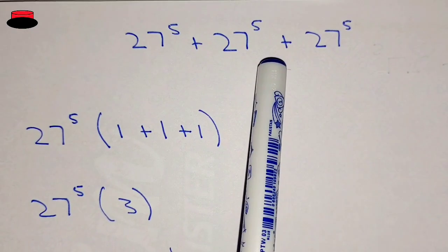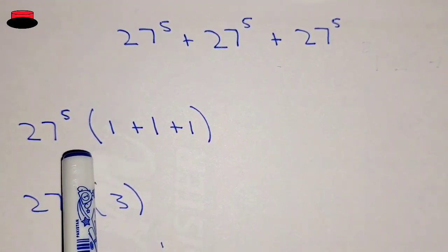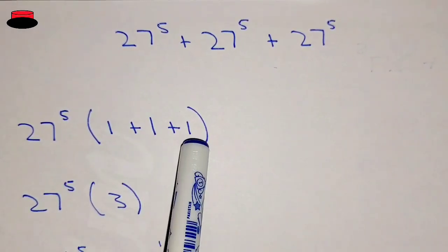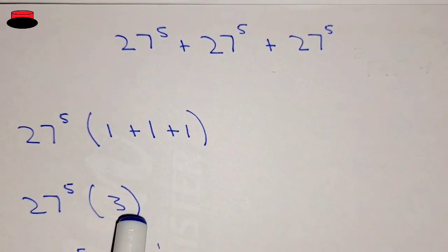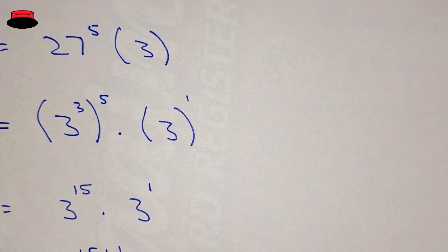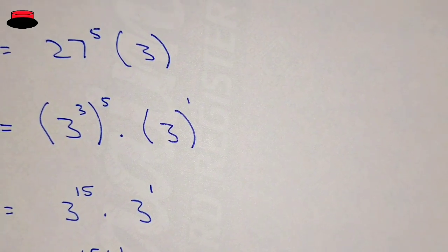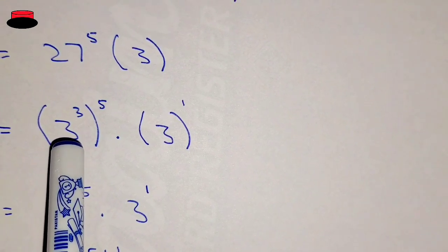27^5 + 27^5 + 27^5. Taking 27^5 common, in the bracket we have 1 + 1 + 1, so 27^5 × 3. Now 27 can be written as 3^3, because 3 × 3 = 9, and 9 × 3 = 27. So (3^3)^5 × 3.